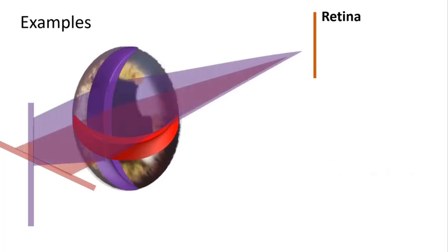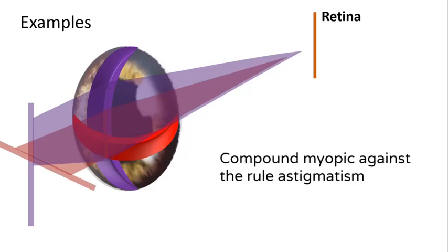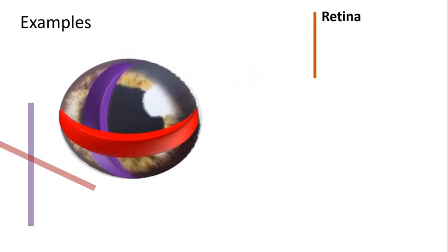Here: step one, no meridian focuses on the retina, so it's either compound or mixed. Step two, both focus on the same side, so it is compound; both are in front of the retina, so myopic. Step three, the horizontal meridian is more myopic, so it is against the rule. This is a case of compound myopic against-the-rule astigmatism.